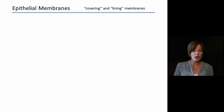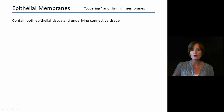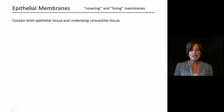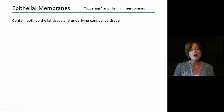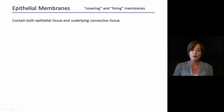Epithelial membranes are primarily for covering or for lining. When we use the term epithelial membrane, it's a little misleading because this is not going to be composed entirely of epithelial tissue. Instead, it will have some epithelial tissue along with some underlying connective tissue. Since two different types of tissues are associated together, it's really more of an organ that we're talking about.